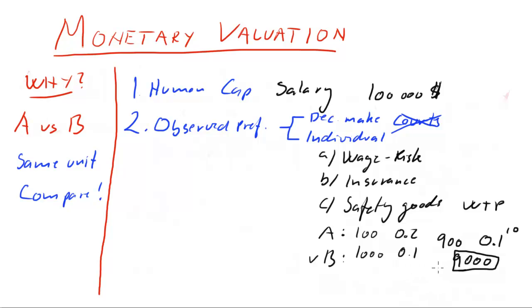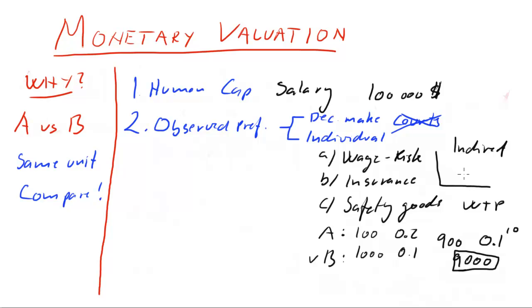Sometimes you don't even have observed preferences. It's possible to use indirect preferences — these direct approaches all involve risky choices, but you can use indirect valuations too. For example, if you want to put a monetary value on a park, you can look at the extent to which people actually travel to the park, since people have different travel costs. You can find the valuation of the park using that travel cost approach.